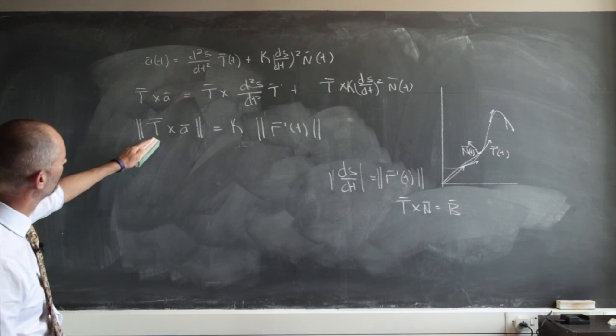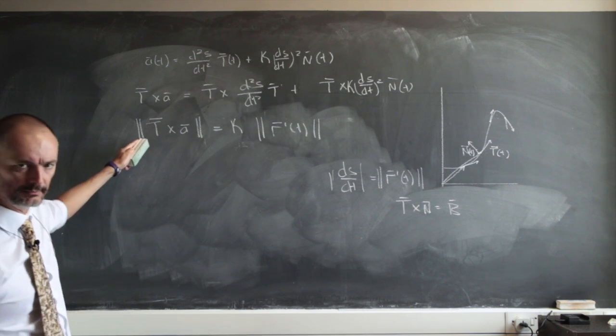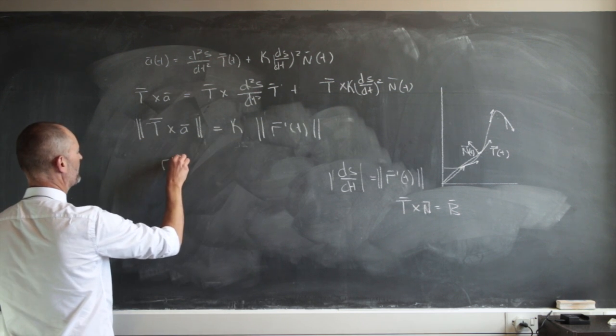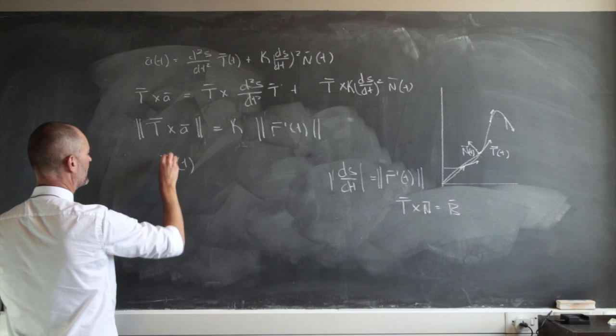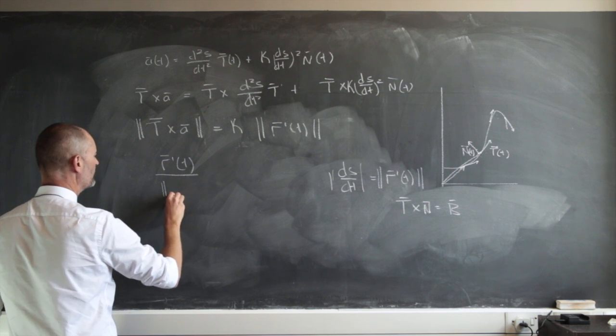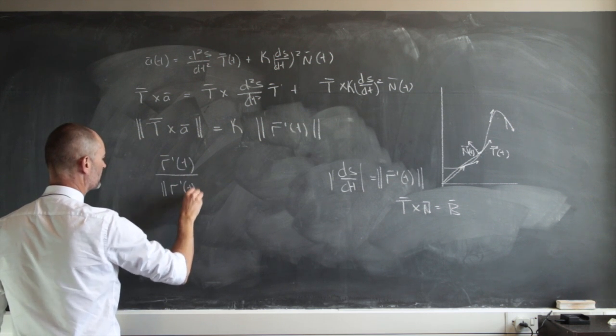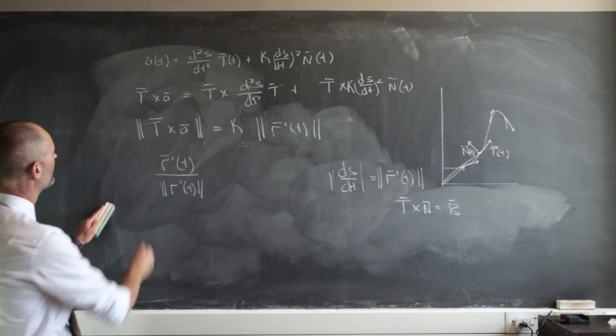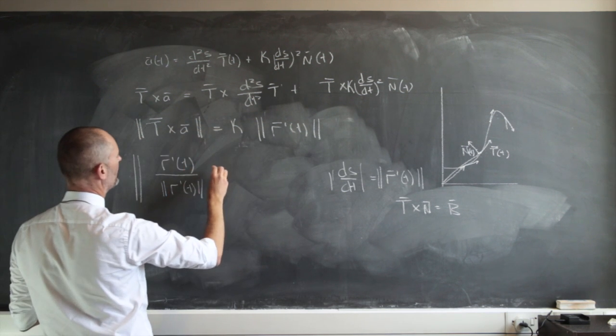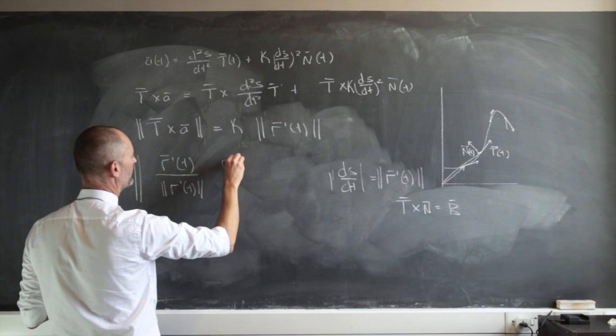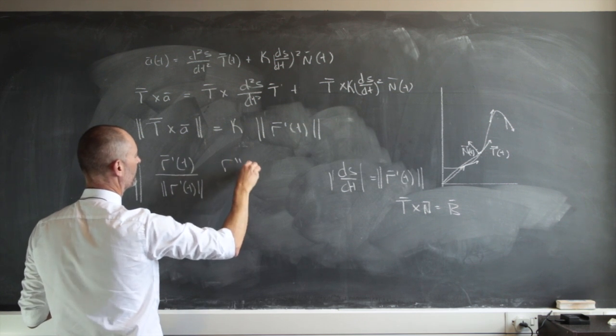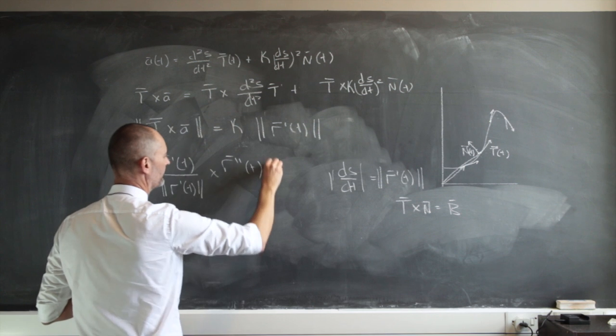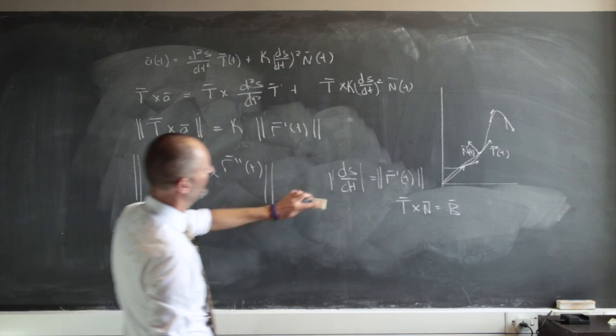What can I write that as? Remember I'm dealing here with the magnitude. So remember that T was r'(t) divided by its magnitude. That was that one. Cross, but I'm dealing all the time now with magnitudes. Cross that which is just r''(t). So I'm crossing these. And that's going to equal kappa.